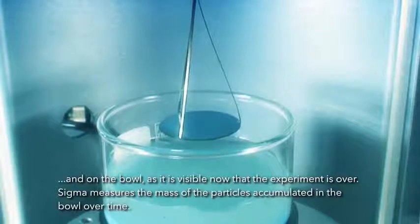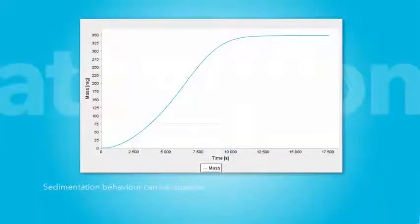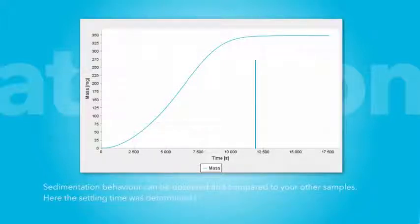Sigma measures the mass of the particles accumulated in the bowl over time. Sedimentation behavior can be observed and compared to your other samples. Here the settling time was determined to be 3 hours and 20 minutes.